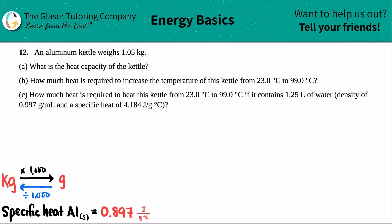Number 12. An aluminum kettle weighs 1.05 kilograms. Part A: What is the heat capacity of the kettle? The question is asking for the heat capacity, so we should know what the formula is.